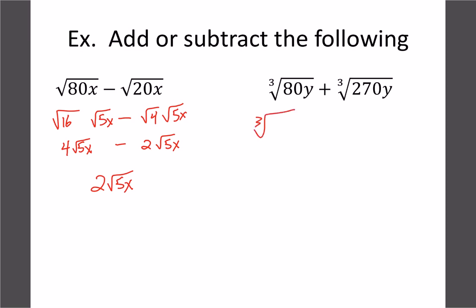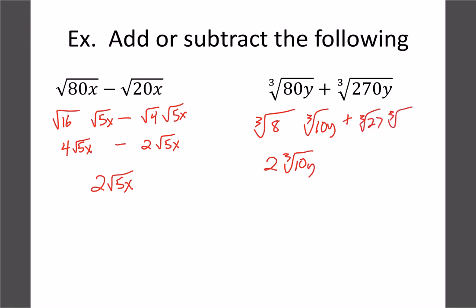For cube roots, we do the same thing. Break ∛(80y): 80 = 8×10, and y stays, giving us 2∛(10y). For the second one, 270 = 27×10, giving us 3∛(10y). Always look for patterns — once you find the radical in the first term, the second is usually the same. Adding: 2∛(10y) + 3∛(10y) = 5∛(10y).